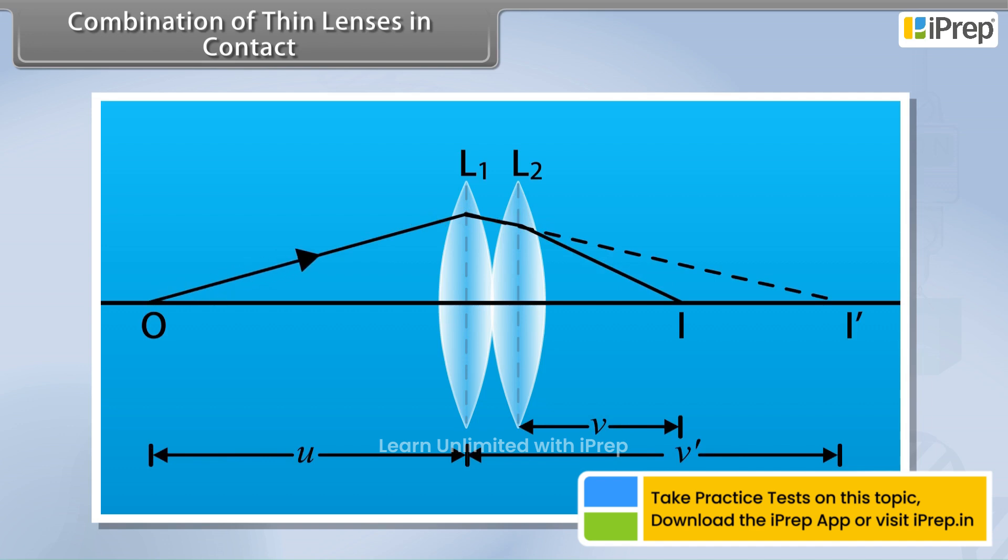The focal lengths of lenses are F1 and F2 respectively and the medium is same on both sides of lenses. O is a point object on the principal axis at a distance U from the first lens L1.